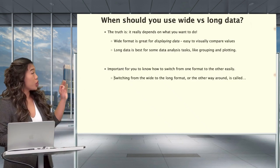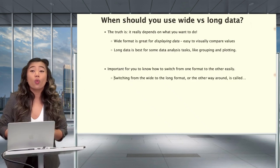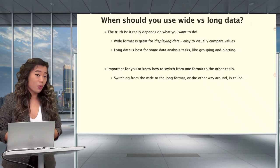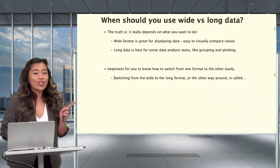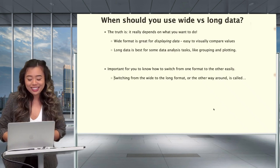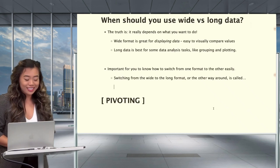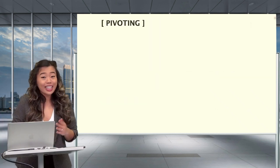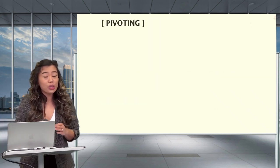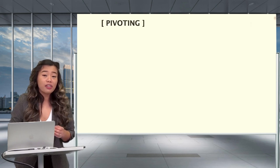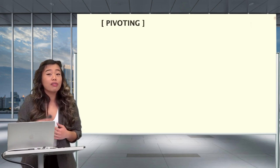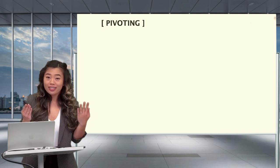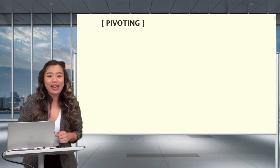Since there's no straightforward answer to when long or wide data should be used, it's essential for you to know how to switch between the two formats easily. The technique for switching from wide to long format, or the other way around, is called — you guessed it — pivoting! In the second half of this video, we'll show exactly how to pivot between the different formats using pivot_longer and pivot_wider.